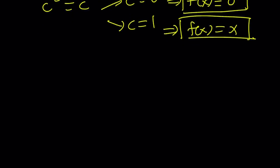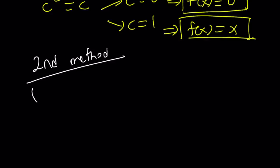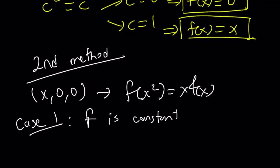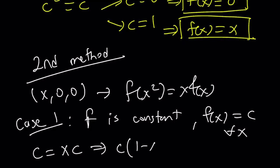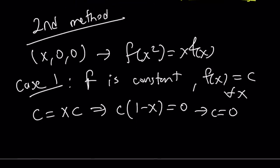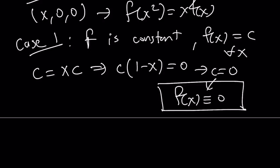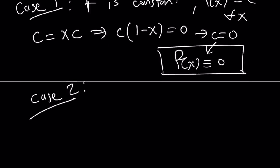Let's talk about the second method. We're going to do something we've used before. Start with (x, 0, 0), which gives us f of x squared equals x times f of x. Now we talk about two cases. Case one: what if f is a constant function? If f of x equals c for all x, then the left-hand side is c and the right-hand side is x times c. This gives c times (1 minus x) equals 0. Since x can be anything, c must equal 0. So f of x equals 0 for all x — one of the two solutions we found before.